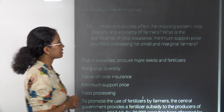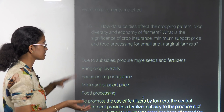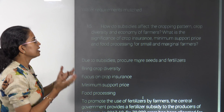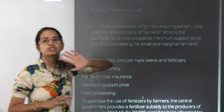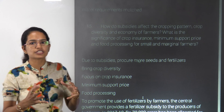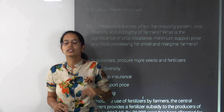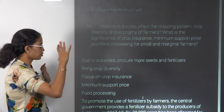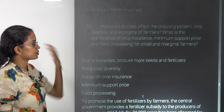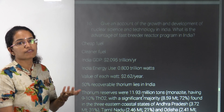The next question covers how subsidies affect cropping pattern, crop diversity, and farmer economy, and the significance of crop insurance, minimum support price, and food processing. Subsidies help procure more seeds and fertilizers for farmers. The Fasal Bhima Yojana brings stability to farmers' lives. We focus on providing a minimum support price for basic crops and promoting fertilizer use through a central government fertilizer subsidy — in 2017-18, around ₹70,000 crore — the biggest subsidy after food subsidy.